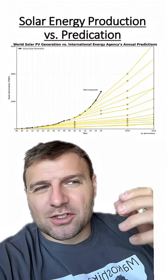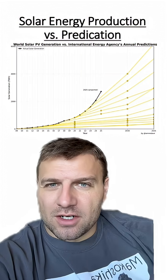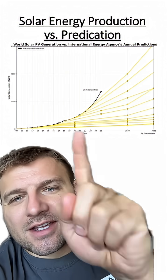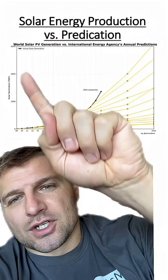I want to talk about this graph because I think it shows how hard it is to predict the future. On the x-axis you have the years and on the y-axis you have solar generation.